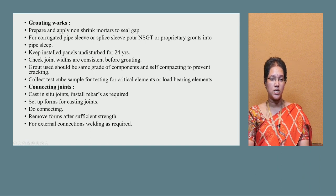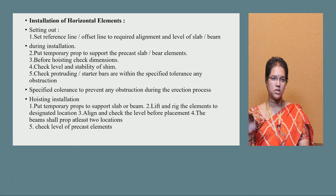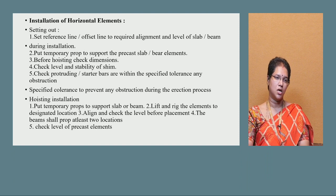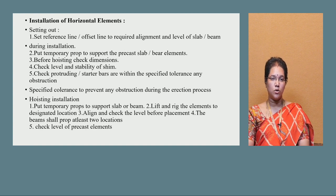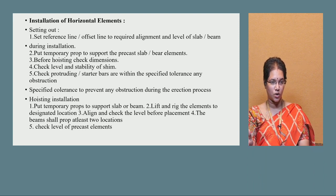For connection joints, use cast inserts for connecting. Remove forms after sufficient strength is achieved. External connections via welding are done if required. For horizontal elements, use a reference or offset line to achieve required alignment for slabs or beams. After installation, put temporary props to support precast slabs and beam elements. During hoisting, check level, stability, and protruding starter bars within tolerance.